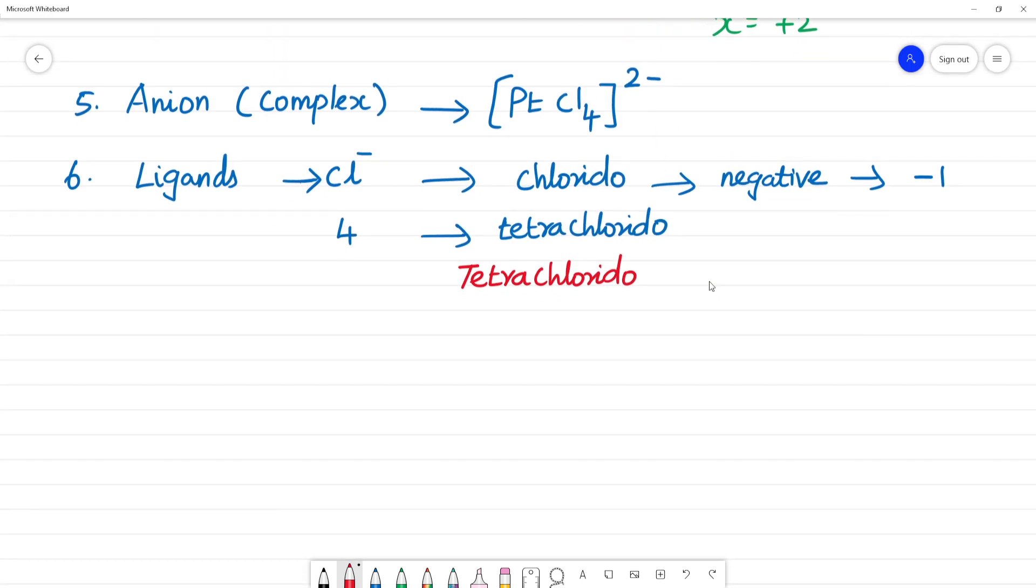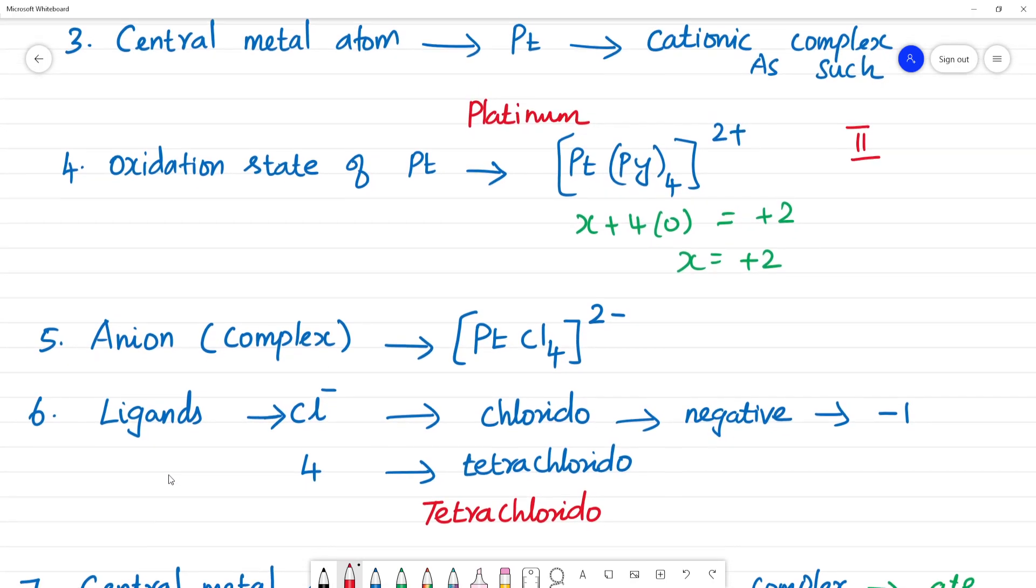Next central metal atom - what is the central metal atom? Platinum. This is in what complex? Anionic complex. So central metal atom Pt. This is in anionic complex. We add suffix to the element, the metal.